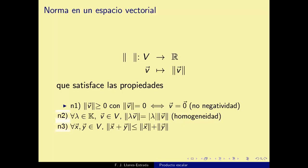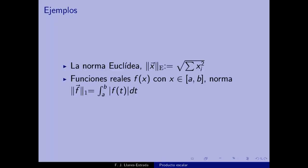La norma más evidente es la euclídea: ‖x‖ = √(x₁² + x₂² + … + xₙ²), la raíz de la suma de las coordenadas cartesianas al cuadrado. Pospongo la demostración de sus propiedades para cuando tengamos el producto escalar, pues entonces será inmediato.